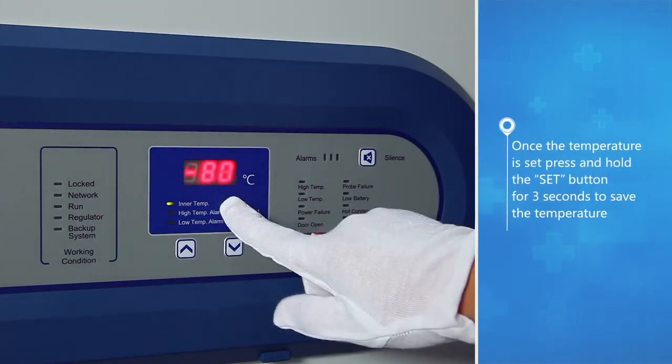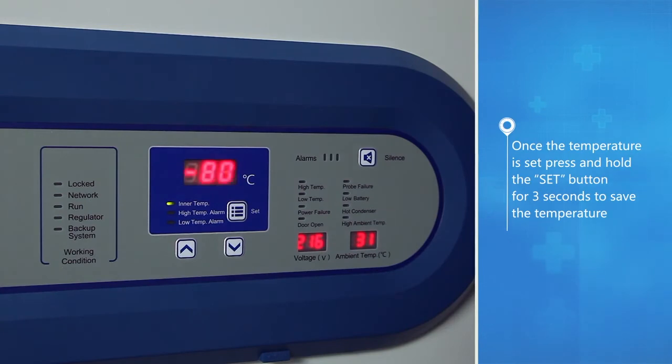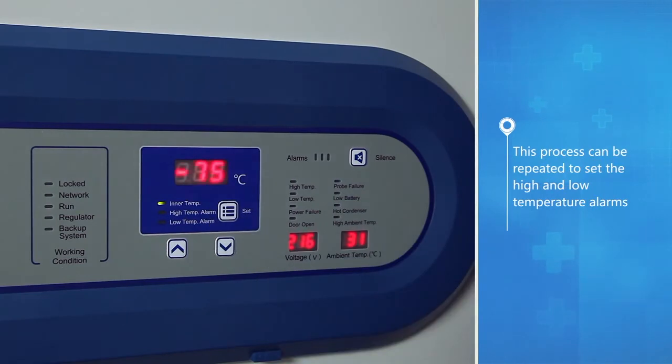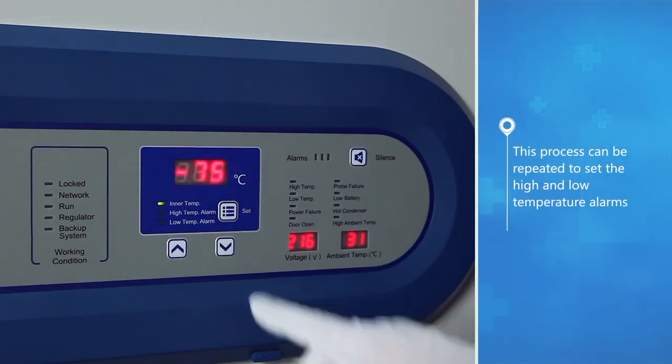Once the temperature is set, press and hold the set button for 3 seconds to save the temperature. This process can be repeated to set the high and low temperature alarms.